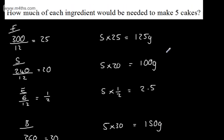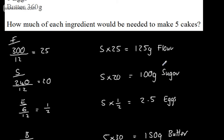So we can see that we need 125 grams of flour, 100 grams of sugar, 2.5 eggs, and 150 grams of butter. So they are the quantities that we require if we're going to be making 5 cakes.